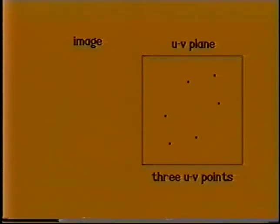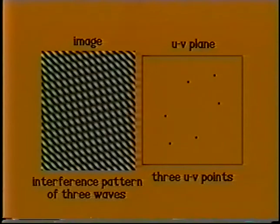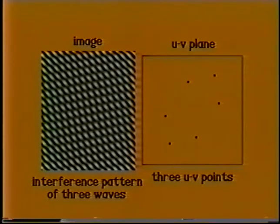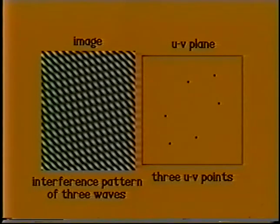When UV points are combined, the resulting image is the sum of the Fourier components. So, what does all this have to do with radio astronomy? We'll find out in the next section.